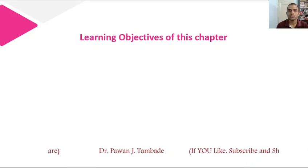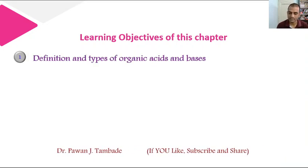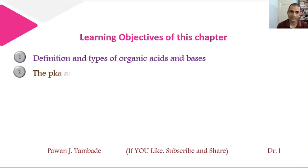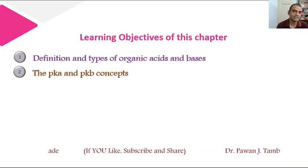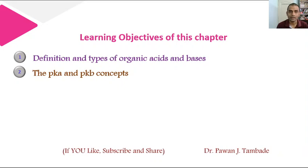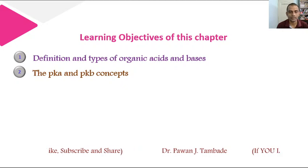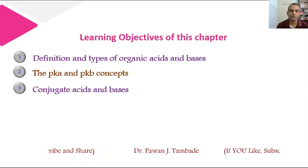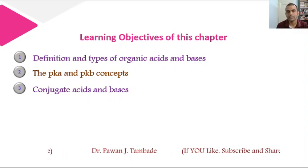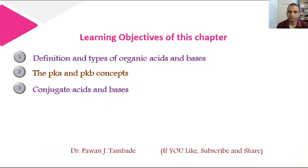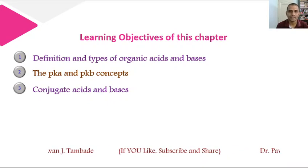The learning objectives of this chapter are: students will come to know about various ways in which organic acids and bases are defined. Then, we will be focusing on the concepts of pKa and pKb — what they are and how they can be used to determine the acidity or basicity of a particular substance. Students will also learn about conjugate acids and bases. Many times it is difficult to comment on acidity or basicity of some molecules; however, if we know the concept of conjugate acids and bases, then it is possible to correlate between acidity and basicity.